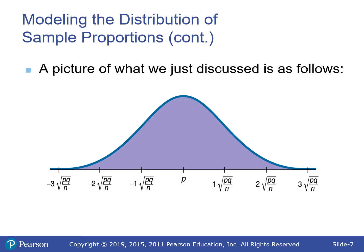The 68-95-99.7 rule applies here, but those are just estimates for 1, 2, and 3 standard deviations. You can compute a Z-score and use Table A or the Z-table to find exact probabilities. There's 95% of values within two standard deviations. So if we got a proportion from 20 samples, 95% of the time that proportion will be within two standard deviations of the mean.